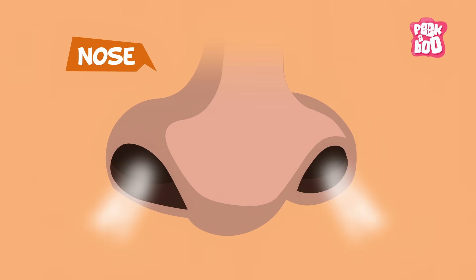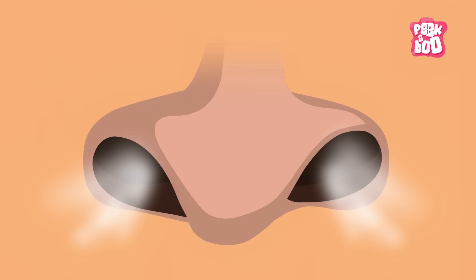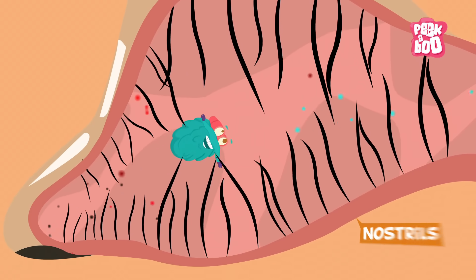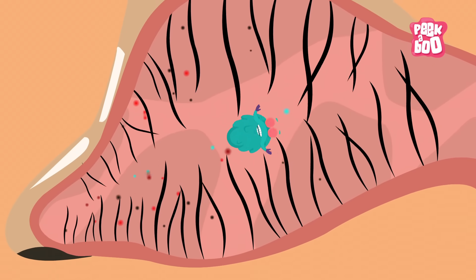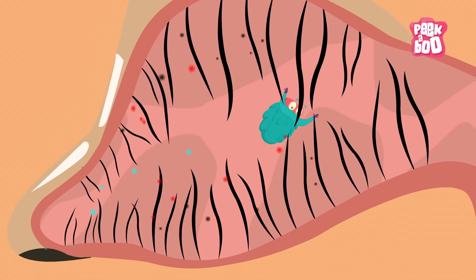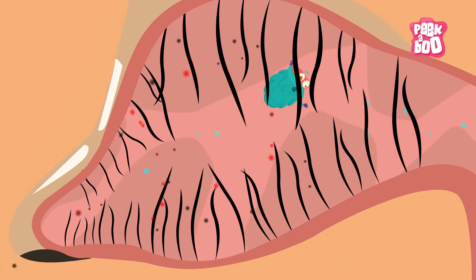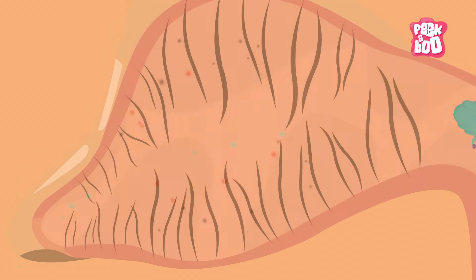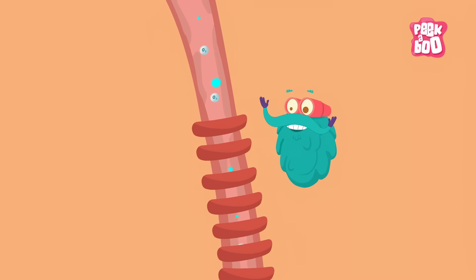When you breathe in, you take in oxygen present in the air. The air then passes through your nostrils. There are tiny hairs present in your nostrils that obstruct all the dust particles. Then the air travels to the windpipe.